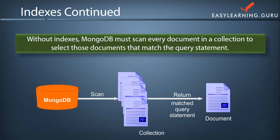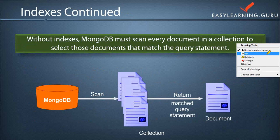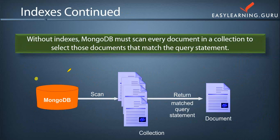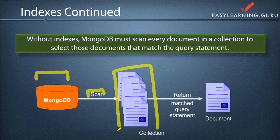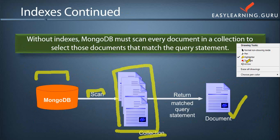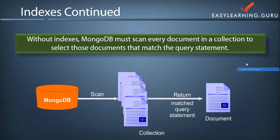Indexes basically reduce the amount of work required to fetch the documents. On the screen you can see a MongoDB database, and when you do scanning over all the collections, it will return and match the query statement with a single document — which means it will take a huge amount of time to go through the entire collection. Therefore, indexes will help you reduce that time.